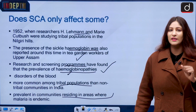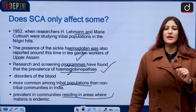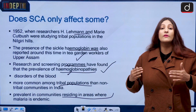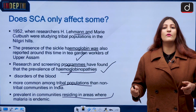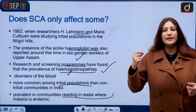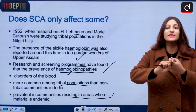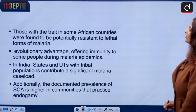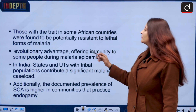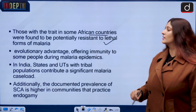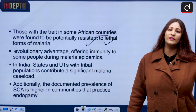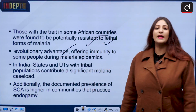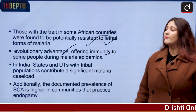Malaria is a vector-borne disease, meaning it has something to do with blood. Where malaria is prevalent, the body, in order to evolve and survive through malaria, started evolving its own red blood cells so that malaria cannot be carried to the body easily. That is why the sickle-cell shape evolved from the general donut-shaped red blood cell. Studies in some African countries found that those with the sickle cell trait were potentially resistant to lethal forms of malaria, providing an evolutionary advantage and offering immunity during malaria epidemics.